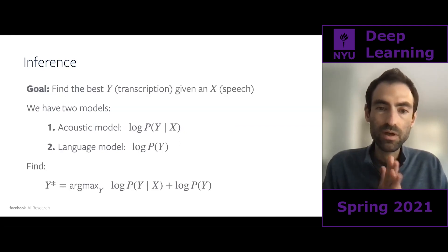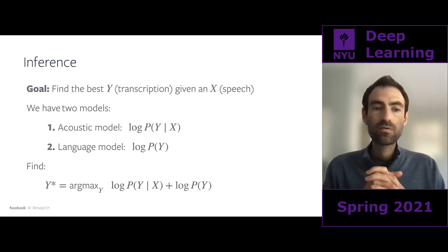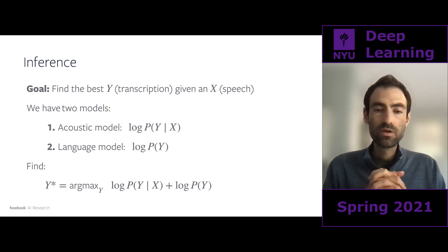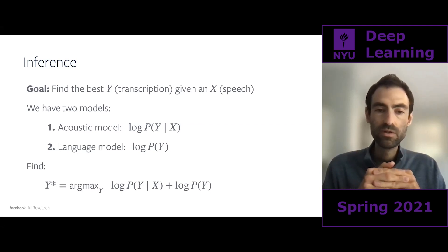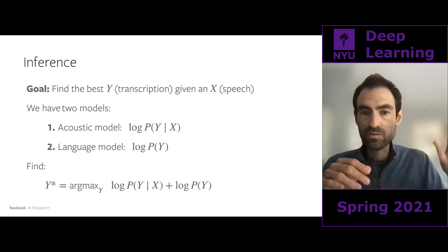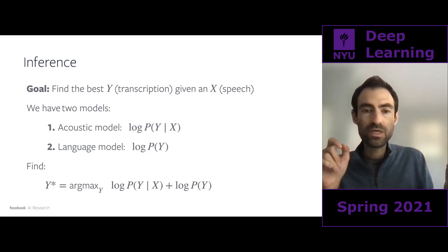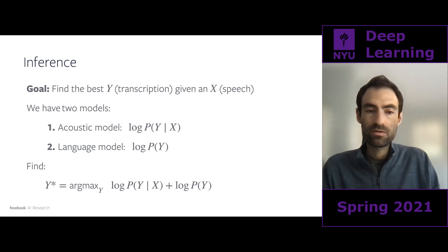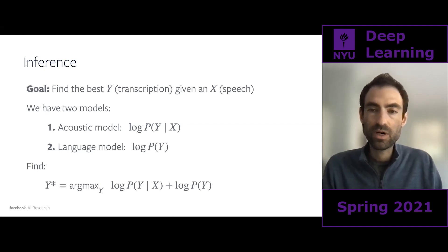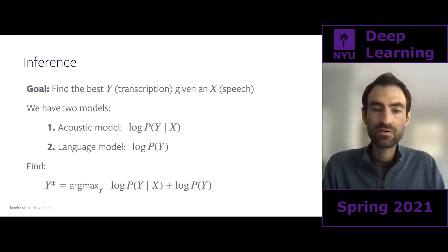Given the acoustic model and language model, we'd like to compute the transcription that maximizes the sum of the scores of these two models. You can imagine searching over all possible transcriptions, but that's not feasible due to the huge number of possibilities. So in practice, we do this approximately: Y-star won't perfectly maximize these scores but will come pretty close.